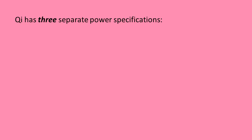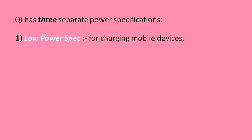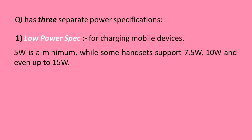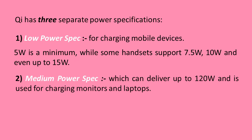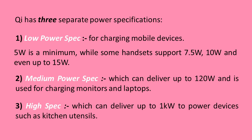Qi has three separate power specifications. One: low power specification for charging mobile devices — 5 watts is the minimum, while some handsets support 7.5, 10, and even up to 15 watts. Two: medium power specification, which can deliver up to 120 watts and is used for charging monitors and laptops. Three: high power specification, which can deliver up to 1 kilowatt for devices such as kitchen utensils.